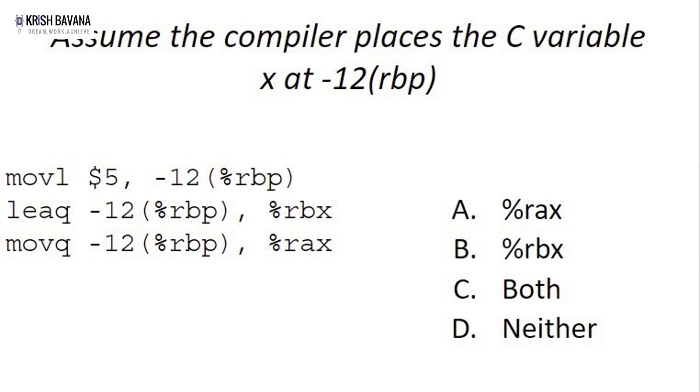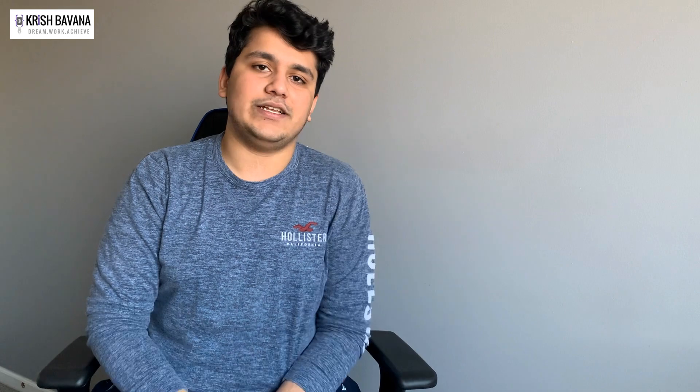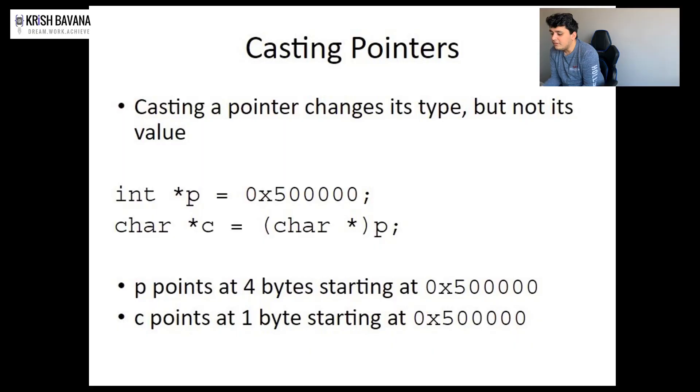Remember: every pointer has a type — int pointer, char pointer, and so on — and void can point to anything. But all of this can only be done in high-level languages like C or C++. It cannot be done in lower-level languages like assembly, because assembly doesn't have types. How do we handle it? By byte sizes — if you're trying to figure out the type, you can only figure it out by the byte size.